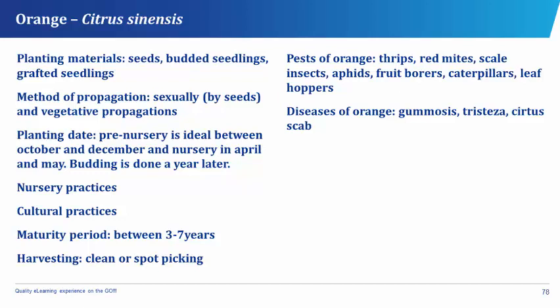While in the nursery, the seedlings are replanted at 60 centimeters by 60 centimeters spacing, planted around April and May. Watering, weeding, and shading are provided. Budding and grafting are done a year later. In transplanting, after one year of budding, the seedlings are transplanted to the field at a spacing of 7.0 meters by 7.0 meters. Cultural practices involve weeding, fertilizer application, mulching, irrigation, pruning, and insect and disease control.